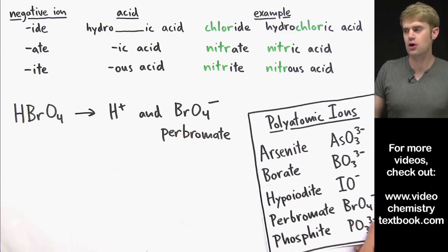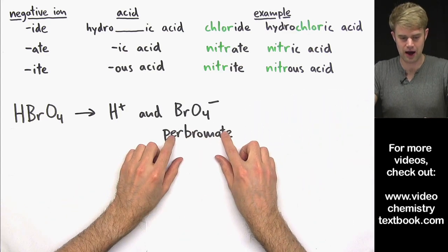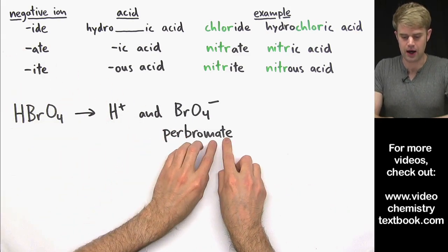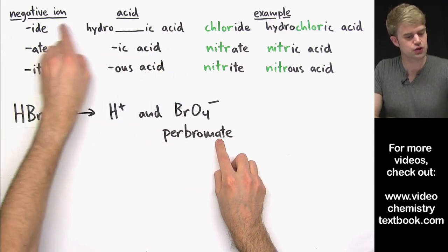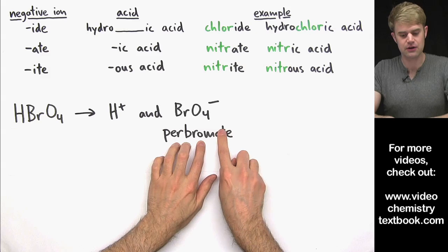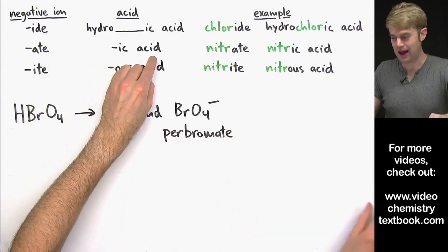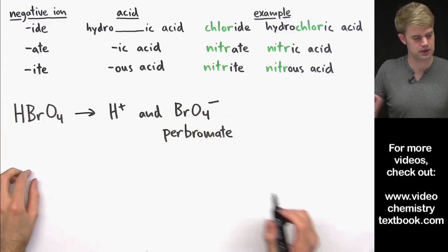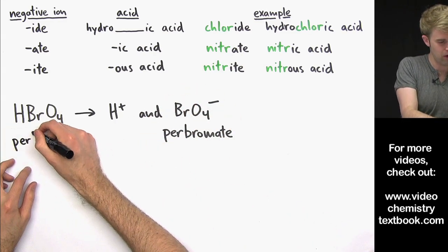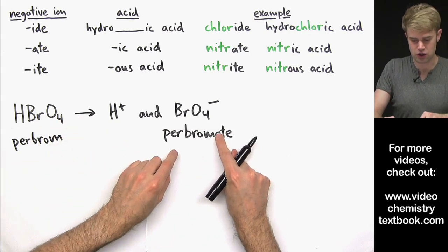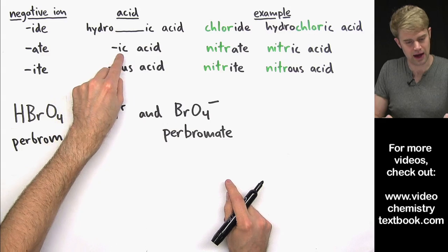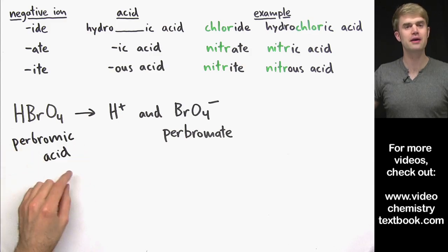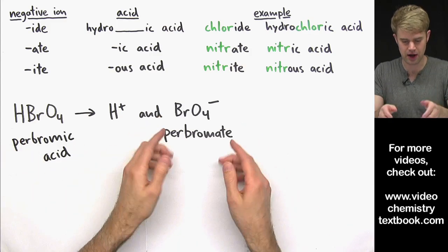Now that I know the name of the negative ion in this acid, I can use these names to figure out what to call the acid. This ion ends in A-T-E, so I'm going to follow this rule here. I'm going to remove the A-T-E from the name and replace it with ic acid. So the name of this acid that contains this negative ion is going to be perbrome and then I don't put the A-T-E on. Instead, I replace it with an ic acid. So this acid is perbromic acid that contains a negative ion perbromate.